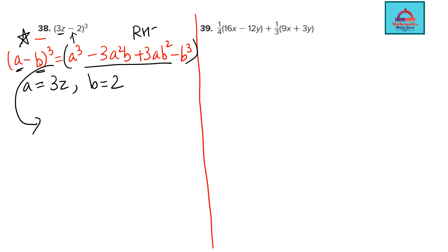So this right side we will use. So let's find a³. So a³ is 3z³ minus 3a². So I'm just replacing a with 3z and b with 2. I'm using this 2 plus 3 times ab². So a is 3z, b is 2² minus 2³. So this right hand side is giving us the answer. So let's open the bracket, simplify.